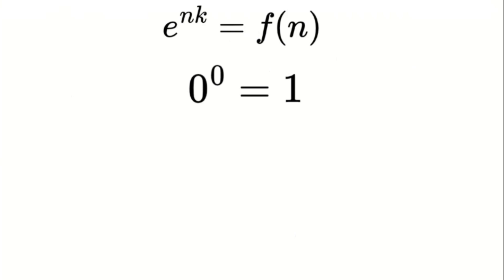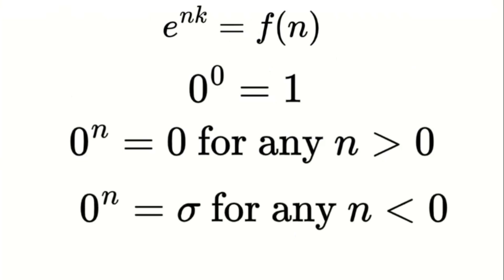This leads us to the first fundamental property of singularities within our 3D system: 0 to the power of 0 equals 1, 0 to the power of n equals 0 for any n greater than 0, 0 to the power of n equals sigma for any n less than 0. This set of definitions provides a consistent framework for handling expressions involving singularities in equations within our new system.